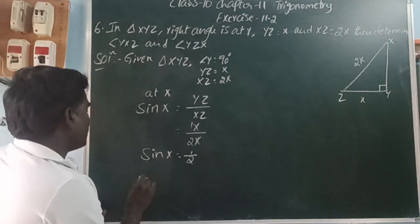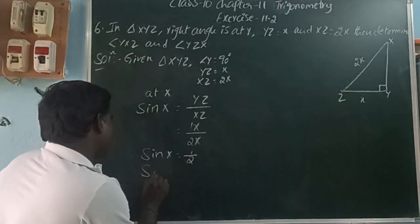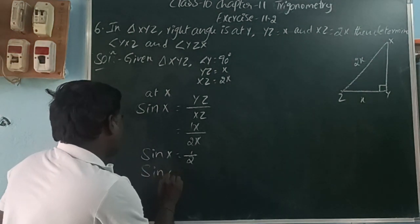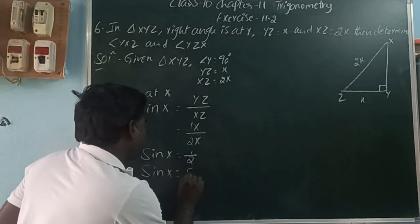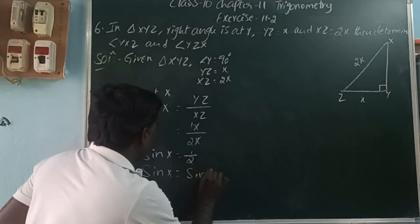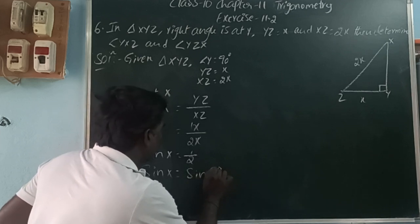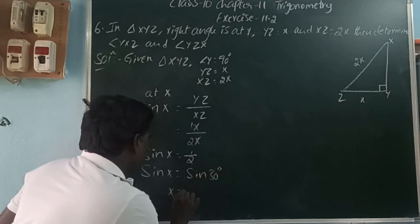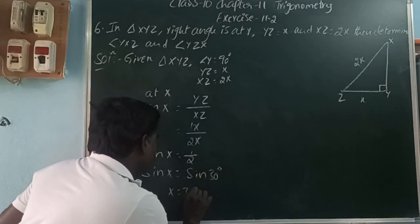In the sin ratio, at which angle do we get 1 by 2? sin30 equals 1 by 2. So sin X equals sin30, therefore X is equal to 30 degrees.